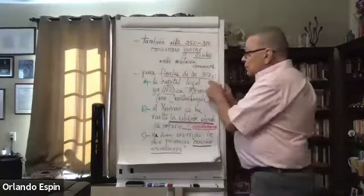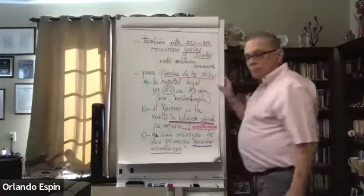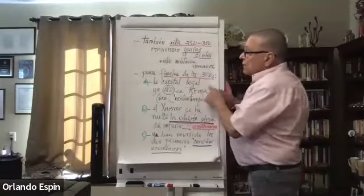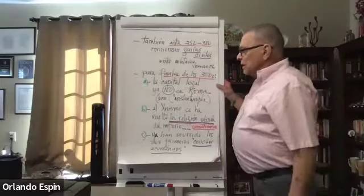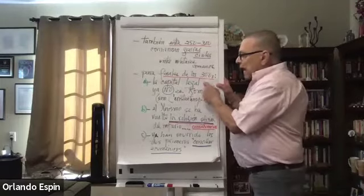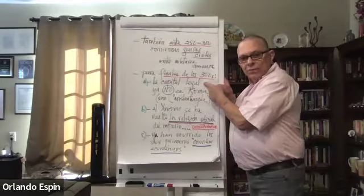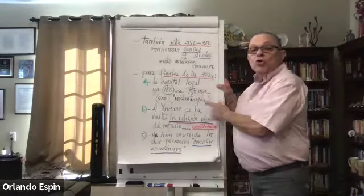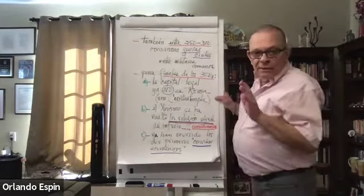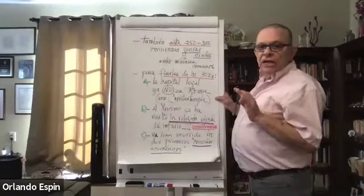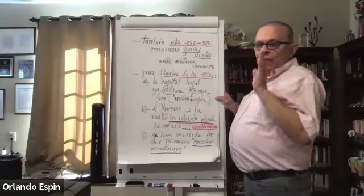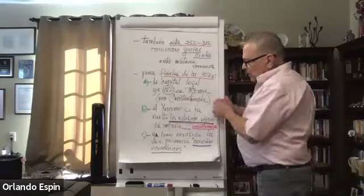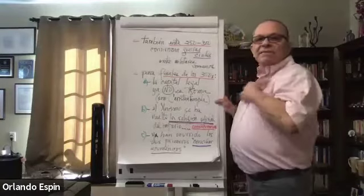Para finales de los años 300, luego un siglo después, para finales de los años 300 del cuarto siglo, la capital legal del Imperio Romano ya no es Roma, ya no es Roma, sino es Constantinopla. Si usted cree que Constantino tenía un poquito de narcisismo, sí. Entonces, nombró la nueva capital tras él.